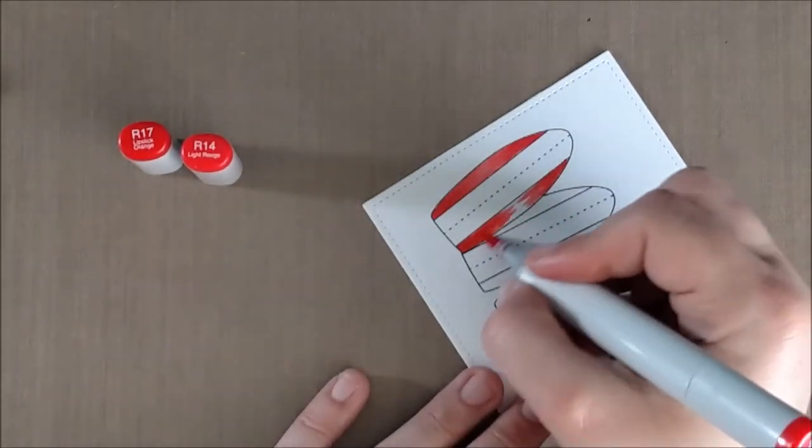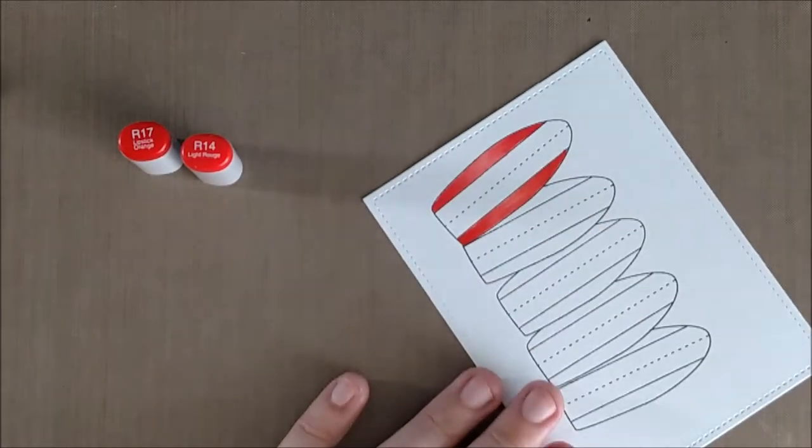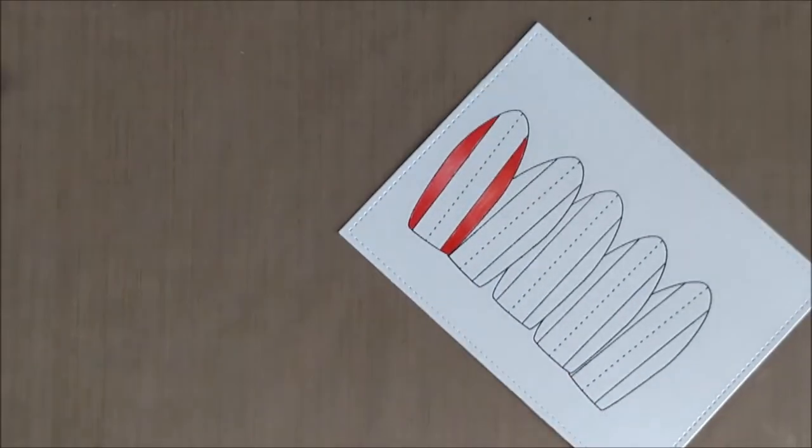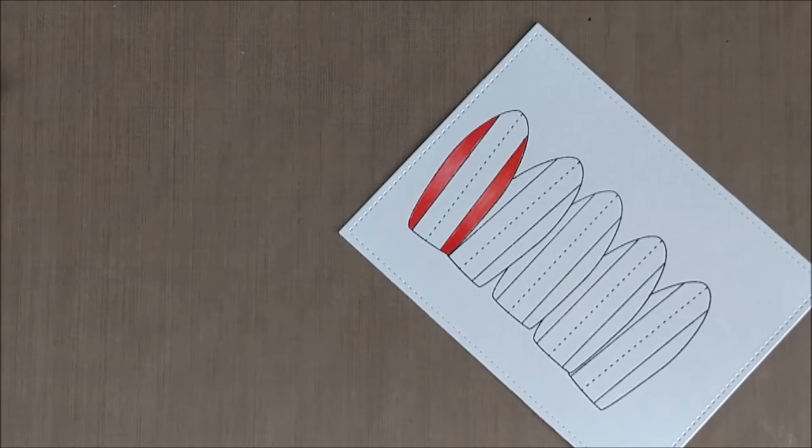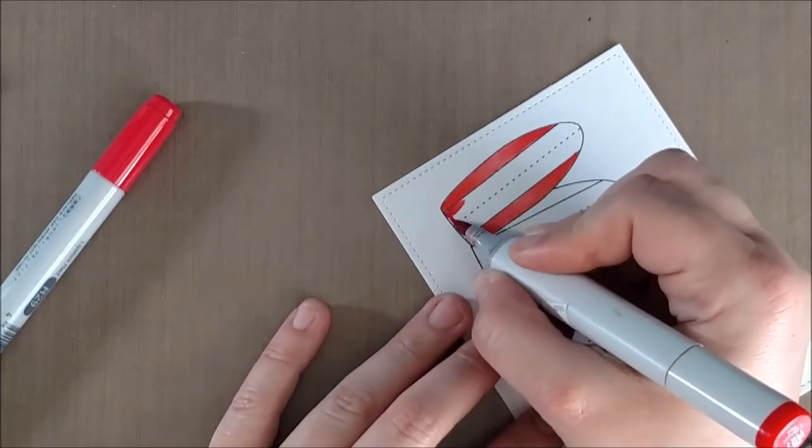When I do the coloring, I'm using R14 and R17 here and you see that I am bringing in the darker colors on the top and the bottom and creating a highlight in the middle. I like to use a flicking technique. I find that that's a good way for me to blend, particularly on this type of paper.